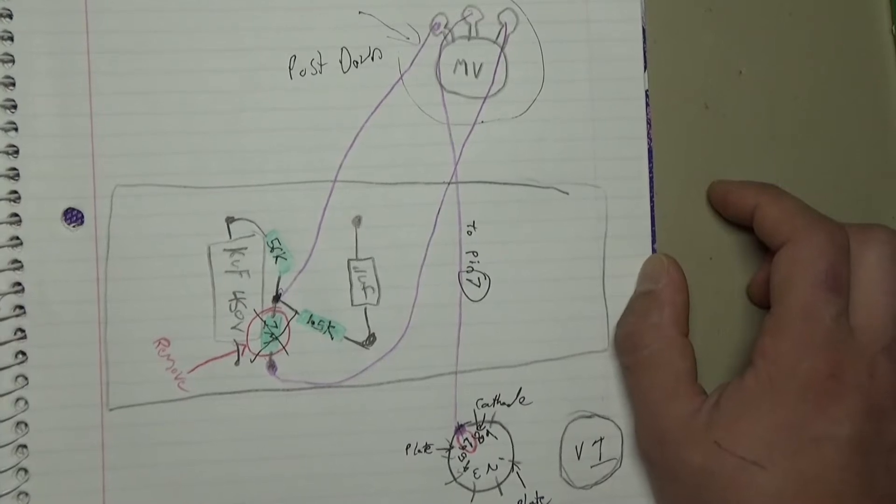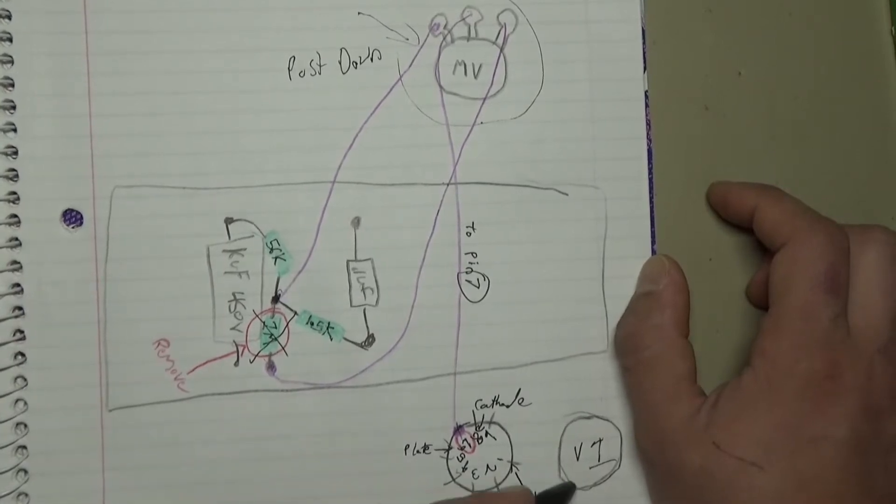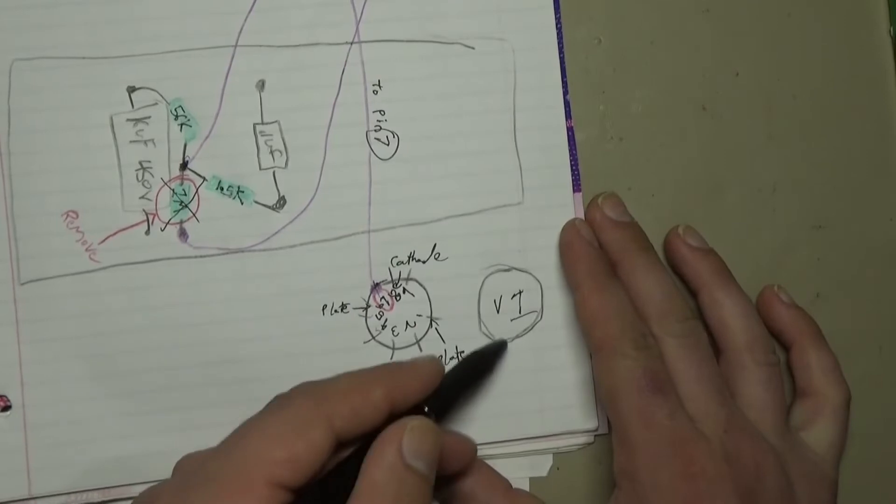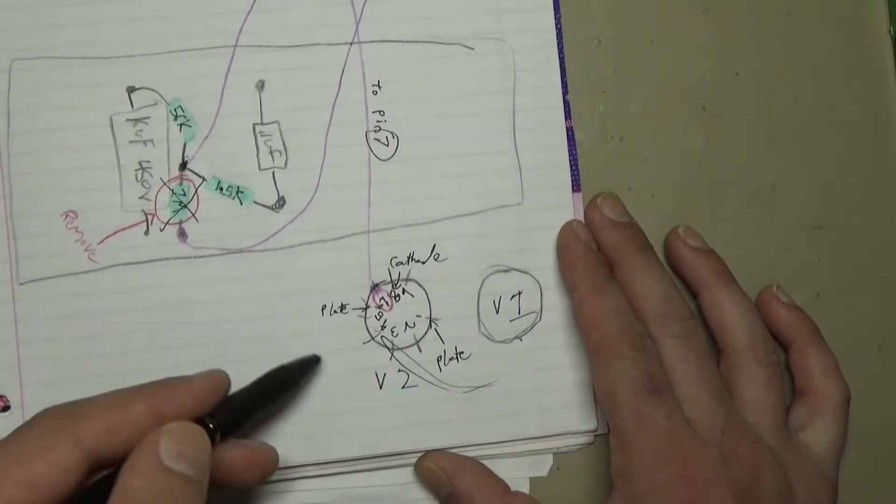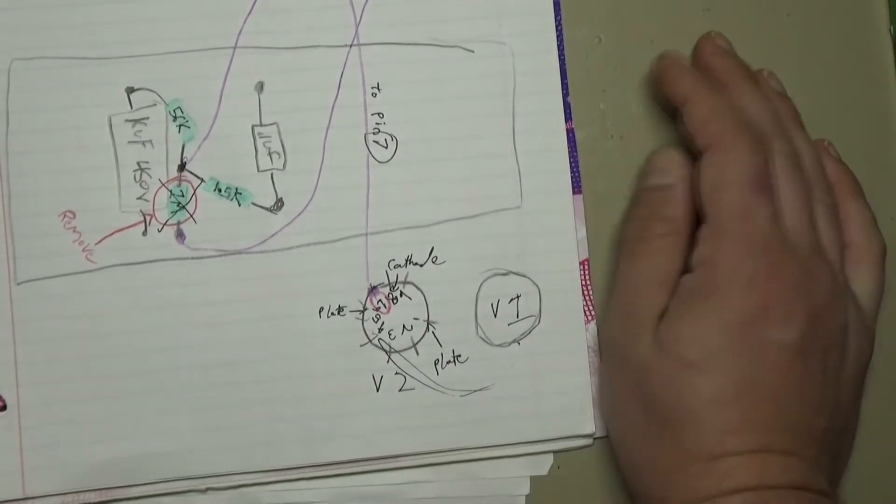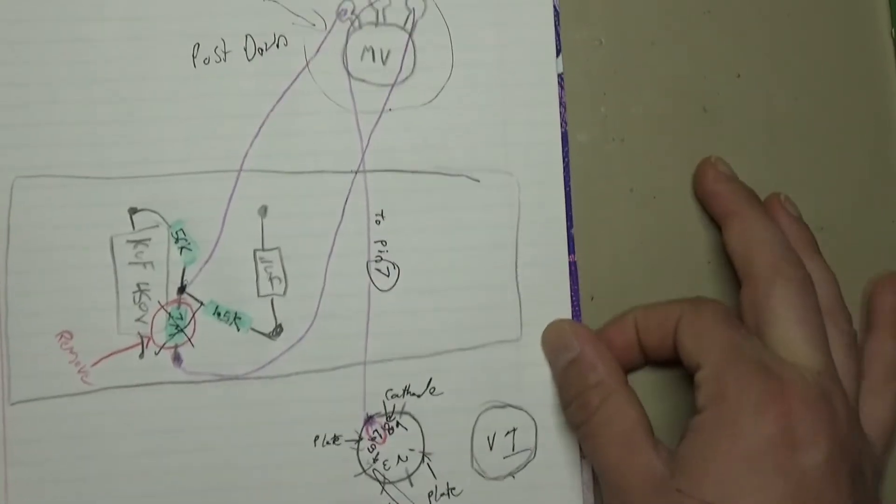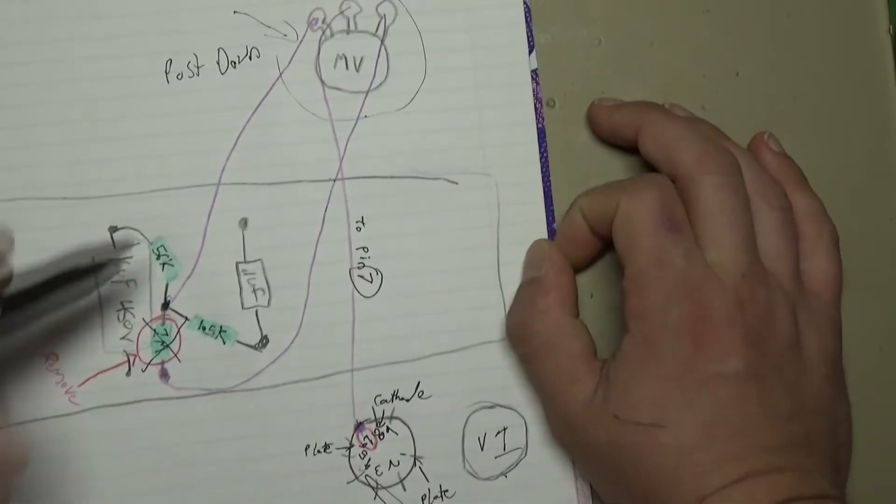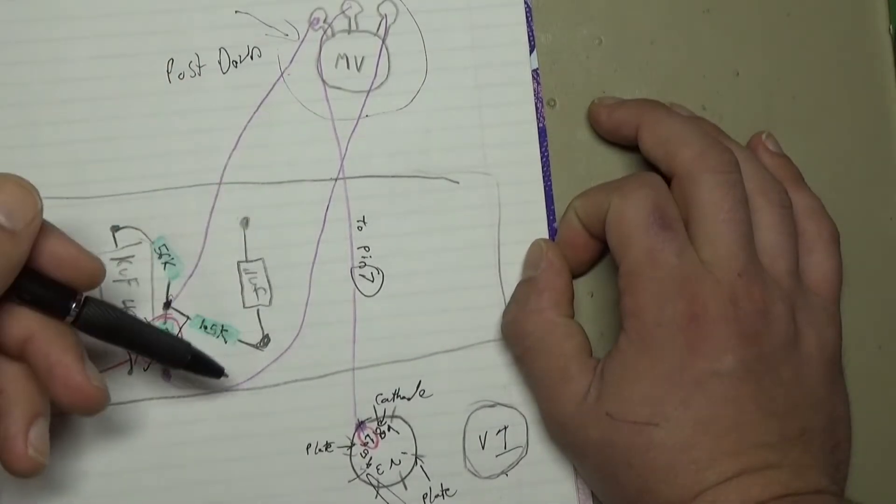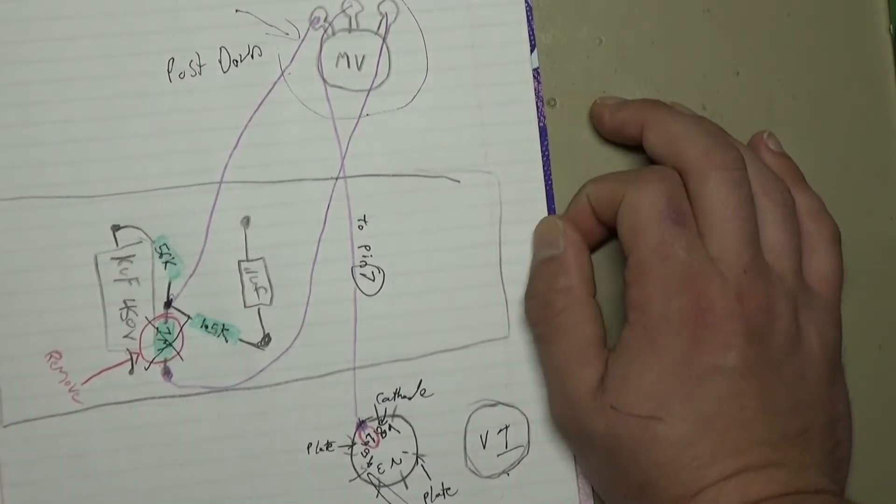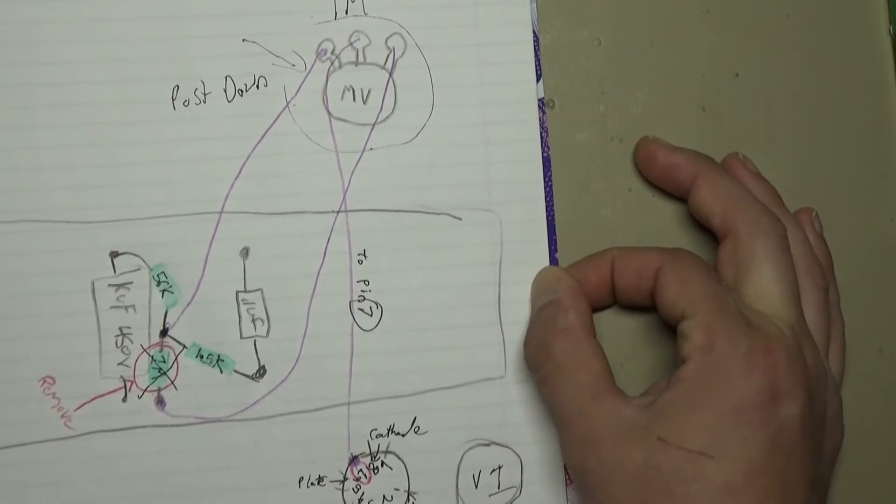Now one thing to remember is we don't want to introduce noise in the circuit, and remember our filament wires are down here, right? And if we get it near our filament wires, it's going to introduce noise. So if I can, I'm going to try to run these wires underneath the board, but I don't think that's going to be possible. So either way, we're going to get it done. Stick around.